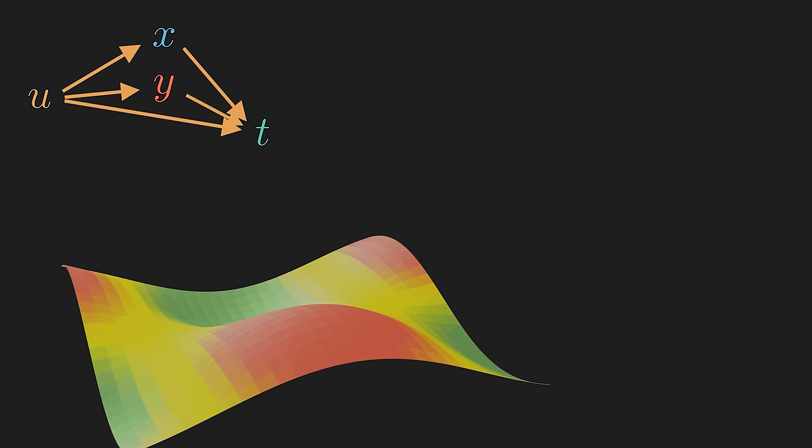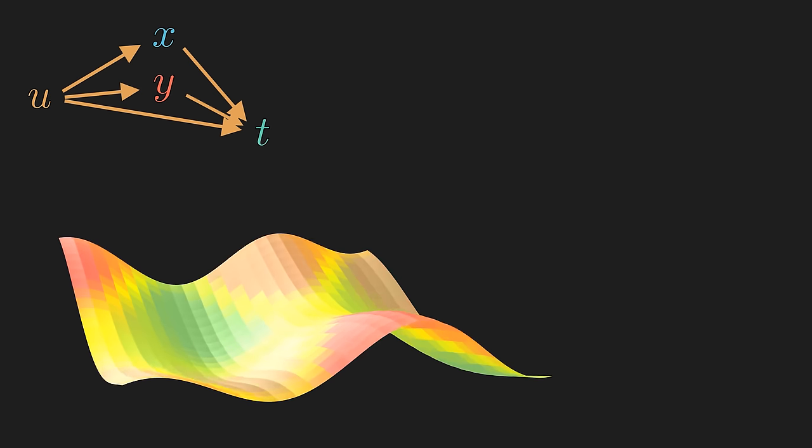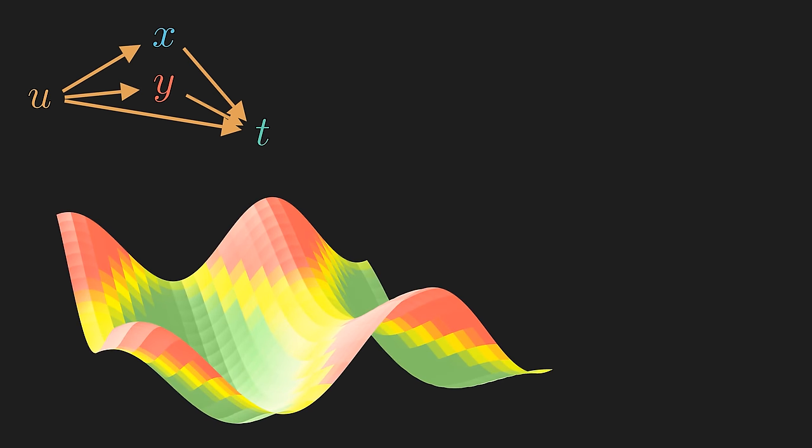For example, think of u as the temperature on a two-dimensional plane with x and y coordinate. Then the temperature at each point could change over time due to a source of heat or air current or for whatever reason. And the rate of change of the temperature at each point is the partial derivative of u with respect to t. And the other two partials with respect to x and y simply are slopes in each spatial direction.